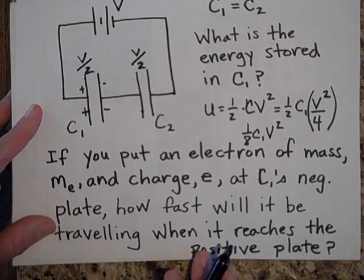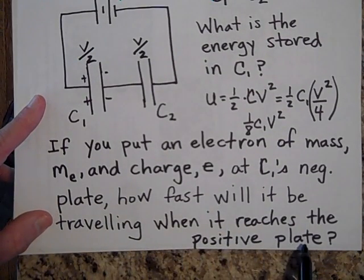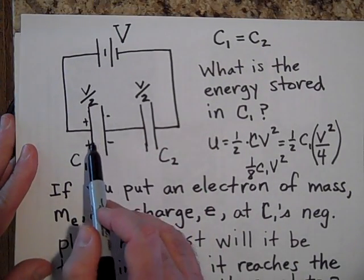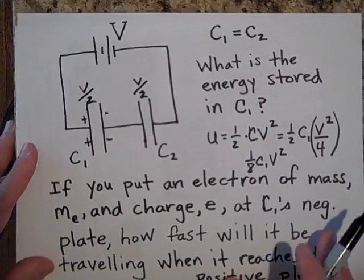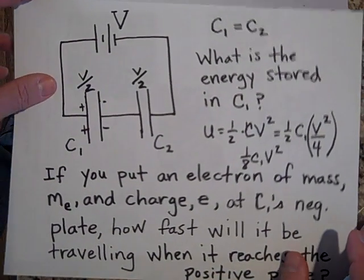It's going to zip over to the positive plate. And what we want to know is how fast will it be traveling when it reaches the positive plate? In terms of these quantities, V, C1, and all that good stuff. How fast is it going to be going when it reaches the positive plate? So go ahead and try that.